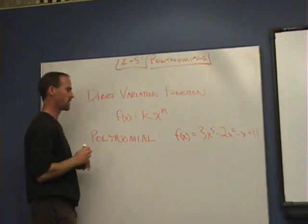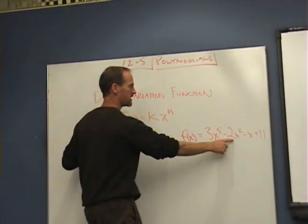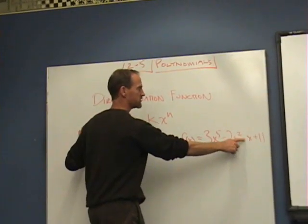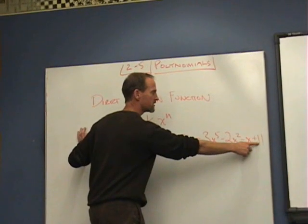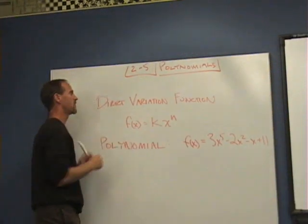Here n is 5, here the exponent is 2, here it's an invisible 1, and here the exponent is 0. That's a constant function and that's still part of the direct variation function, so that's okay.